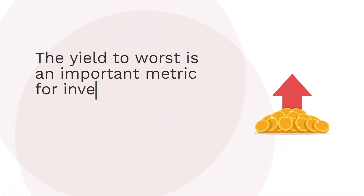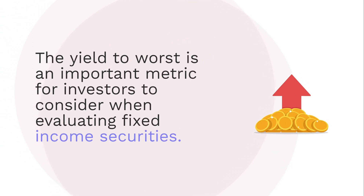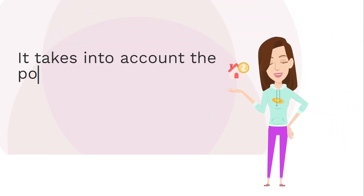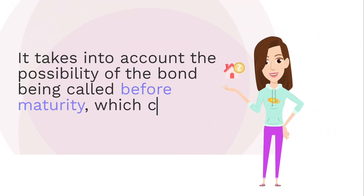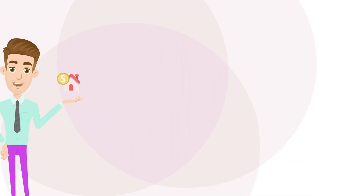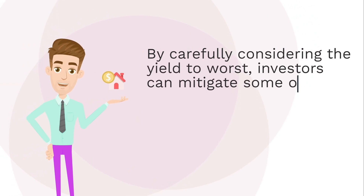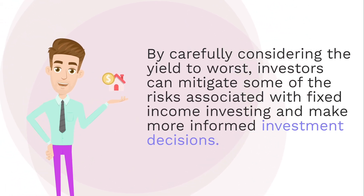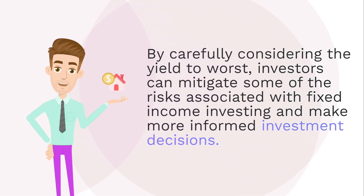The yield to worst is an important metric for investors to consider when evaluating fixed income securities. It takes into account the possibility of the bond being called before maturity, which can result in a lower return than expected. By carefully considering the yield to worst, investors can mitigate some of the risks associated with fixed income investing and make more informed investment decisions.